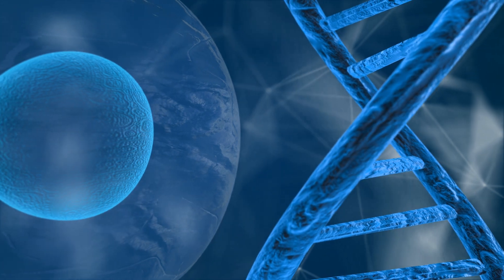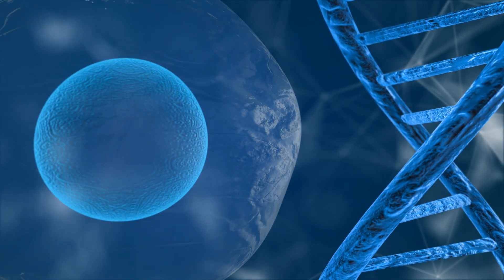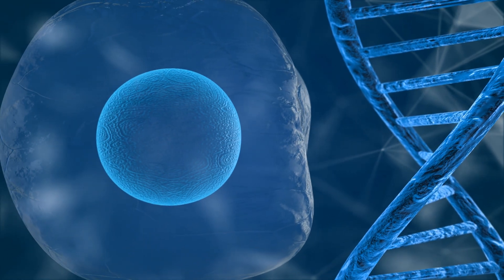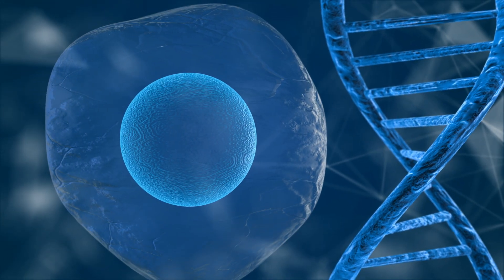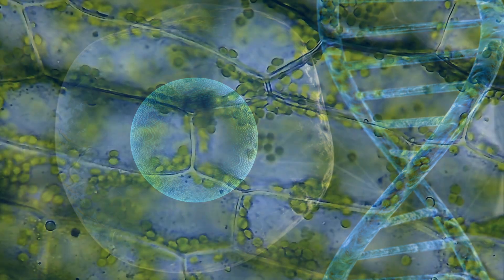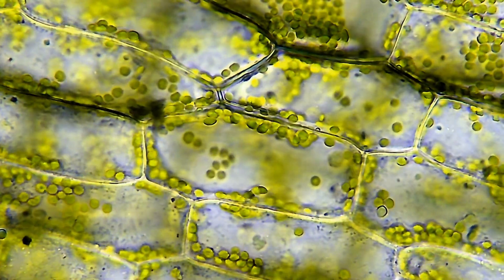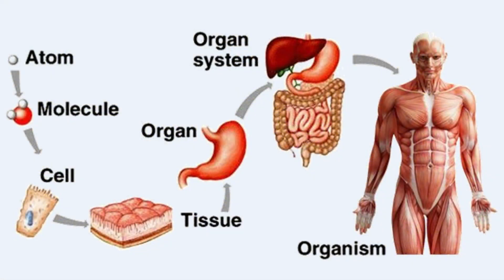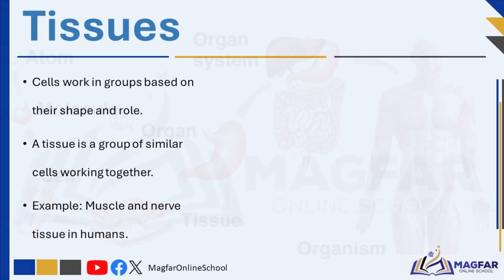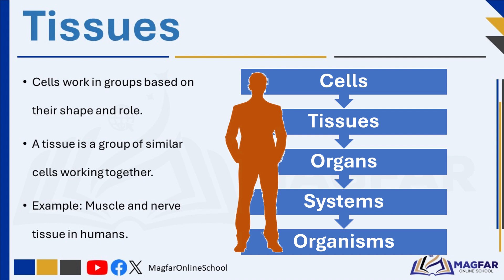As we saw previously, cells are the basic units of life, forming the foundation of all living organisms. A cell consists of a mass of cytoplasm and a nucleus, surrounded by a cell membrane. In plant cells, an additional cell wall provides extra support and protection. The contents of a cell include a large number of atoms of various types. These atoms combine to form molecules, which then group together to create organelles — the specialized structures within the cell. In the body, cells do not function individually but instead work in groups, organized based on their shape and function.